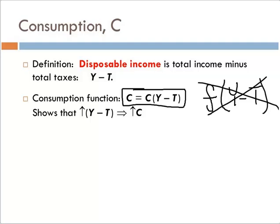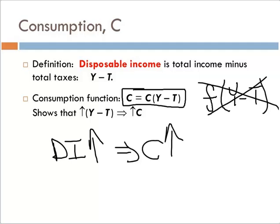As your disposable income goes up, your consumption goes up. That makes sense. What would happen if your boss gave you a raise and doubled your salary? Your disposable income goes up, so you're going to consume more. Think about what most college students do when they graduate and get their first job — they go out and replace the old college car. Their consumption went way up because their disposable income went up.